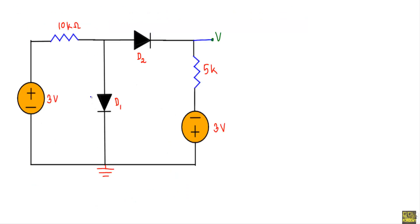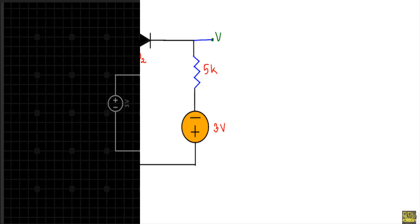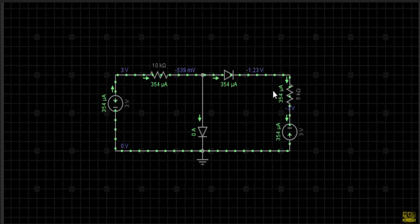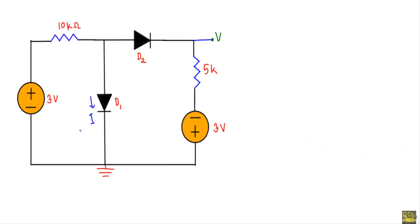We have to calculate the current through diode D1, which is I, and the voltage from this terminal to ground. The simulation of this circuit shows the current flowing through diode D1 is 0 ampere and the voltage between the two terminals is minus 1.23 volt. Let me proceed with the circuit solution. Labeling the nodes: points A, B, C form loop 1, and points A, C, D, E form loop 2.